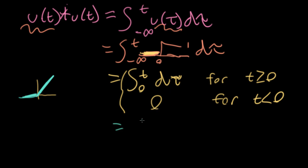Now, if I wanted to write this out as a formula, I could say this is t for t bigger than or equal to zero, and it's zero for t less than zero.